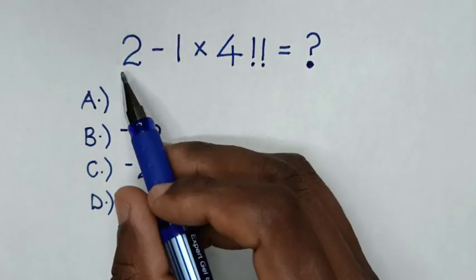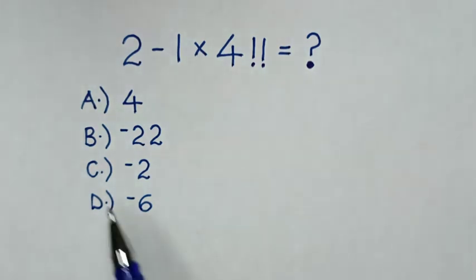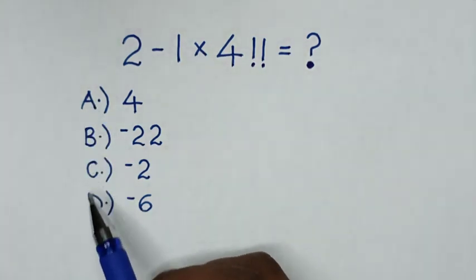Hello, how to solve 2 minus 1 times 4 double factorial by selecting the answers in A, B, C or D.